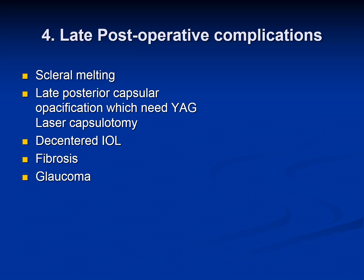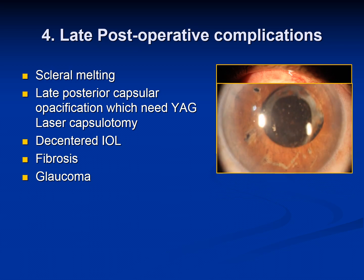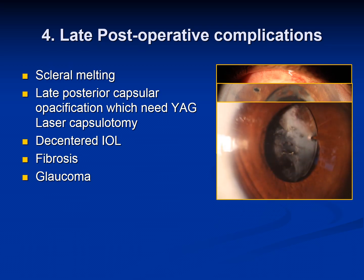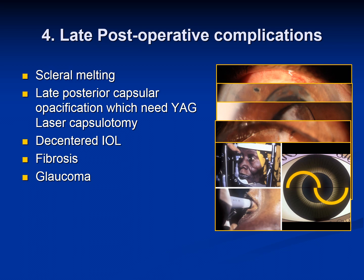Then are the late post-operative complications. First is scleral melting — the sclera can melt because of excessive inflammation, and some patients prone to autoimmune diseases are at risk; it needs to be treated accordingly. Posterior capsular pacification is a late complication treated with YAG laser capsulotomy. Decentered IOL may or may not need treatment. Fibrosis in the anterior chamber depends case to case. Late-onset glaucoma is normally dealt with medically.